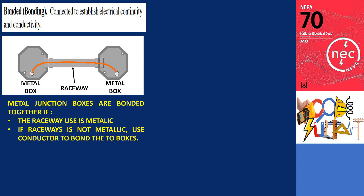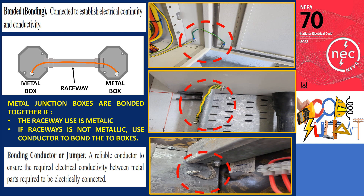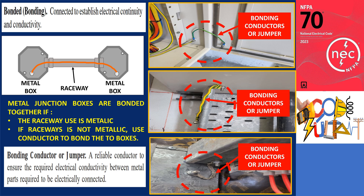What is a bonding conductor or jumper? A bonding conductor or jumper is a reliable conductor used to ensure the necessary electrical conductivity between metal parts that need to be electrically connected. They are utilized to establish electrical continuity and conductivity, ensuring a dependable connection between the metal components. Both terms, bonding conductor and bonding jumper, can be used interchangeably. Although the term bonding jumper is sometimes associated with a short conductor, bonding jumpers can vary in length, with some being several feet long.